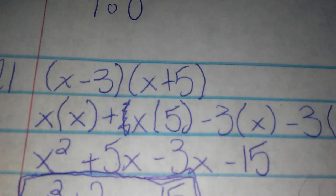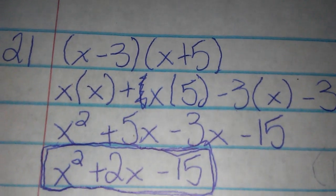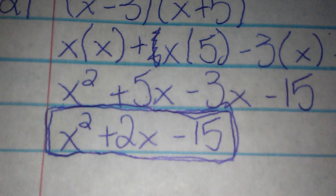So then I simplified it by taking 5x minus 3x, which would be 2x, and then here is my final answer with that.